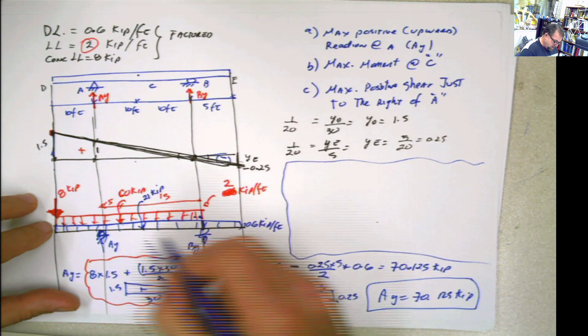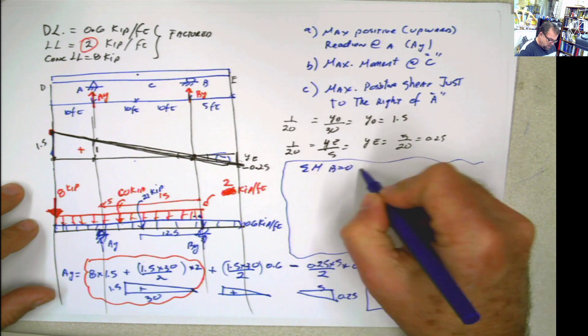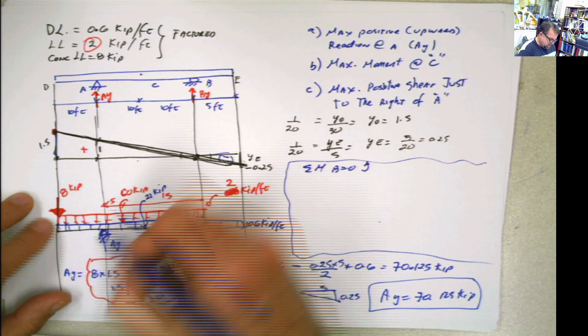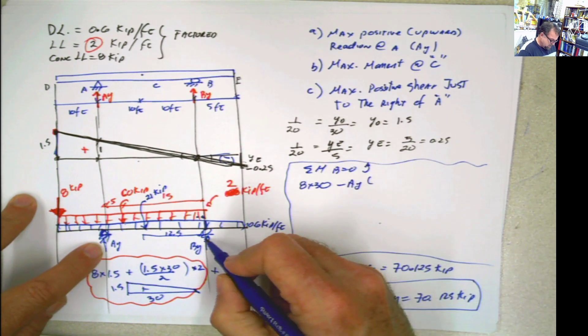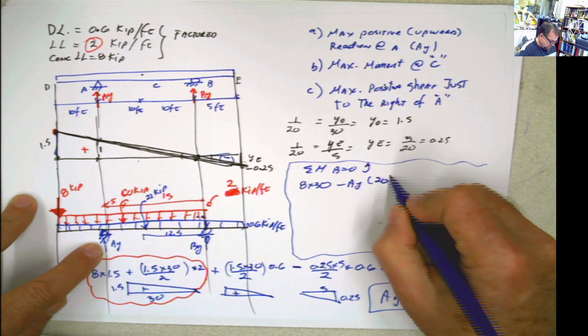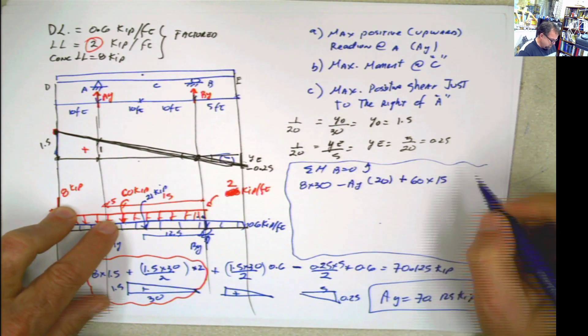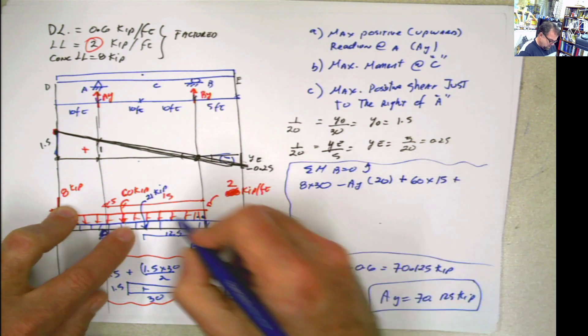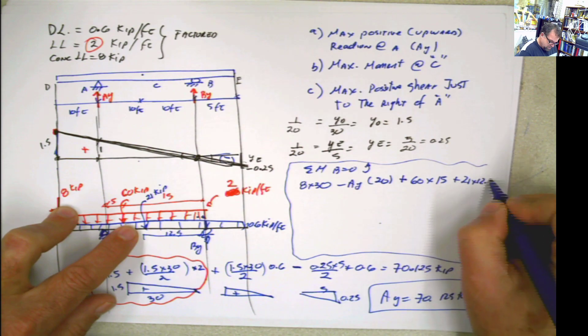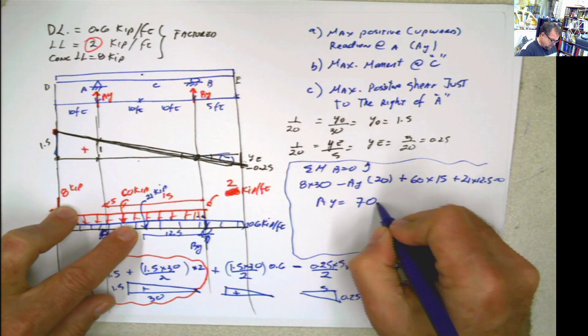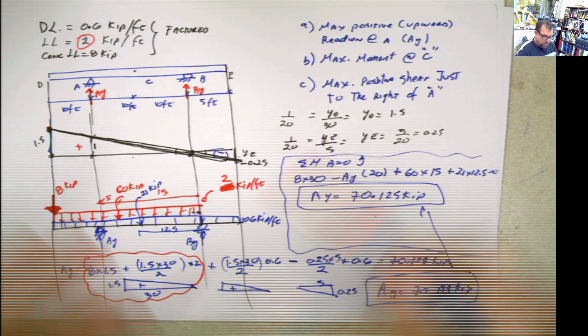And then we do summation of moments at B equals 0. There you go. Then what do we have? 8 times 30, then minus AY times 20 plus 60 times 15, plus this one, which is 21 times 12.5 equals 0. And when we solve for AY, it's 70.125 kip. Same thing. Look at that. First part of the problem completed.